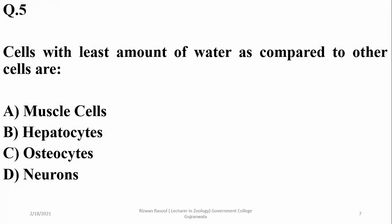Number five: cells with least amount of water as compared to other cells are those cells that are metabolically less active. Osteocytes are bone cells. They are having 20% water on the average. So osteocytes, bone cells, is the answer.